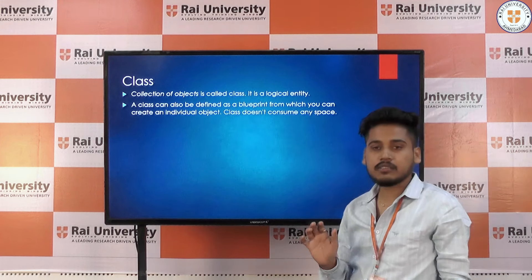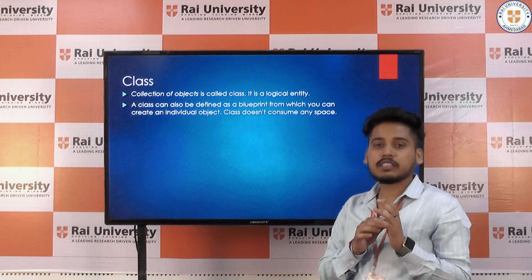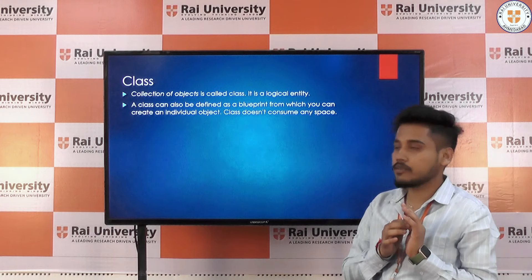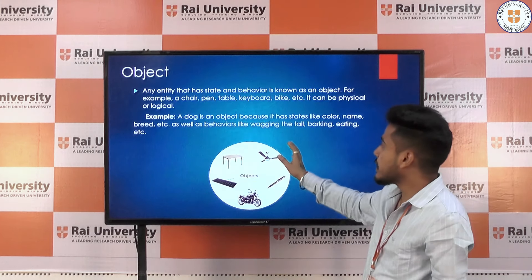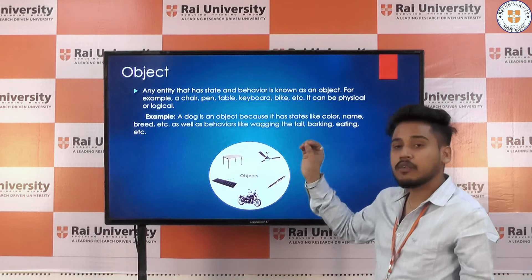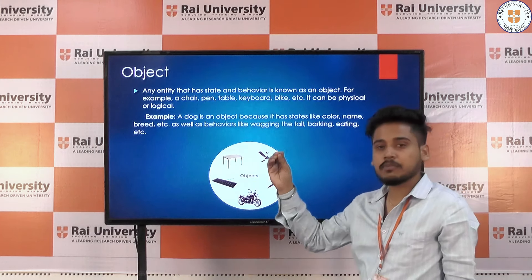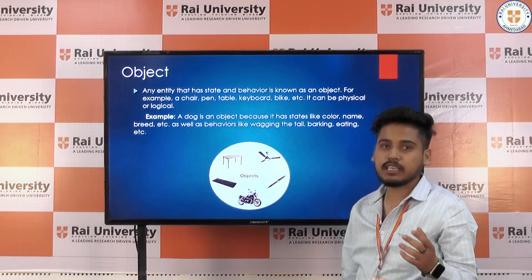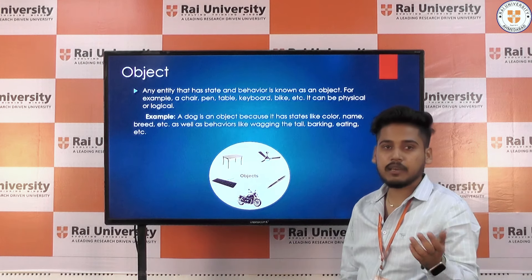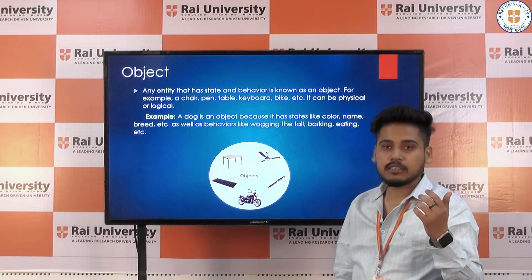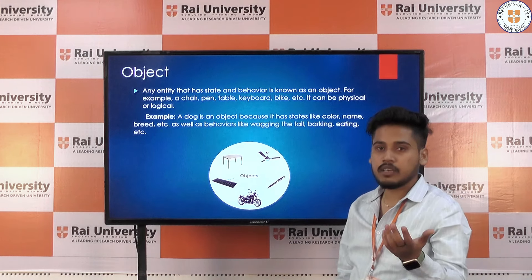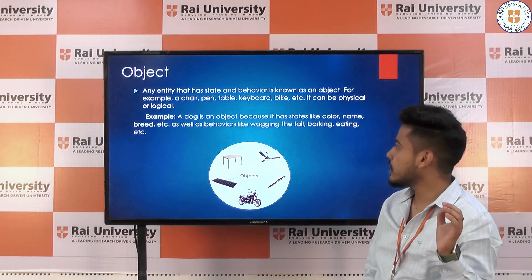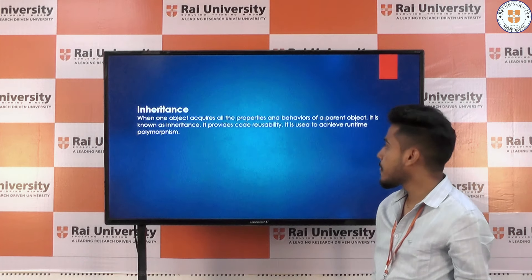First one is Class. Class is a collection of objects, and what is an object? Object is a real world entity that is present in our environment. As we say, table, chair, something like a bottle — that is known as a real world entity.